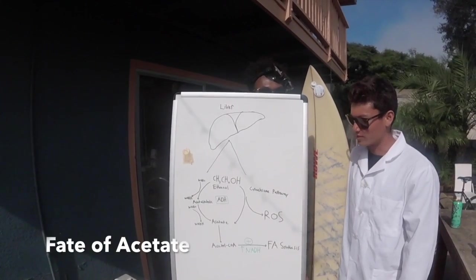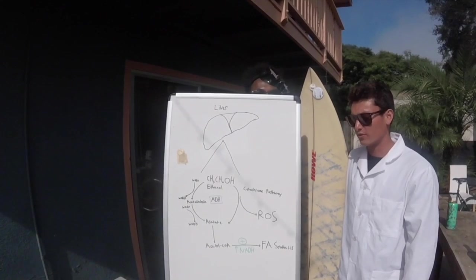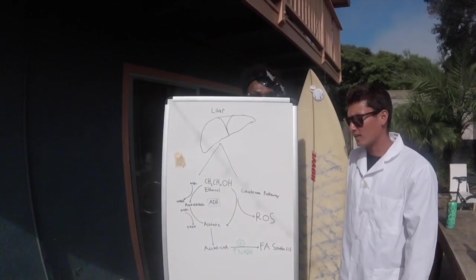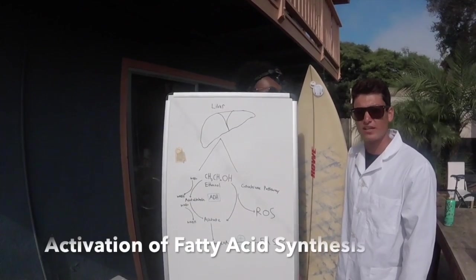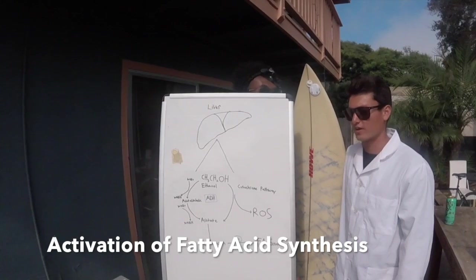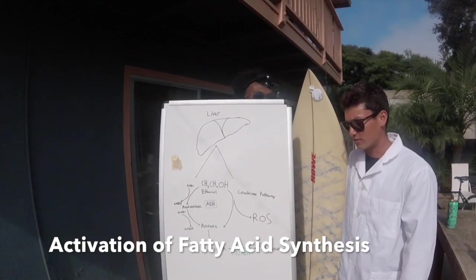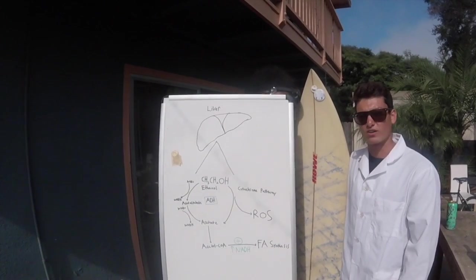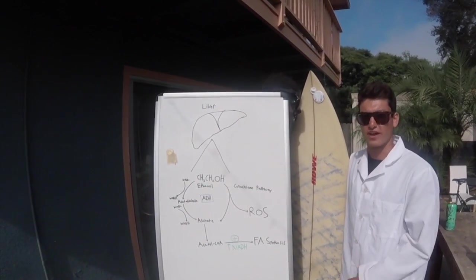Acetate, which is the final product of ethanol metabolism, will then be converted into acetyl-CoA. High levels of acetyl-CoA and high levels of NADH, which result as a byproduct from the oxidation of ethanol, will activate fatty acid synthesis. This is why, when you drink alcohol, your body will produce a lot of fat.